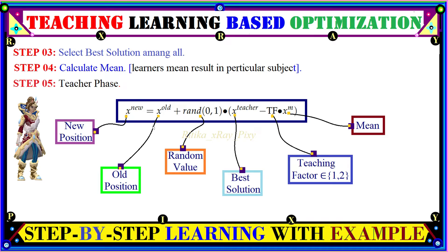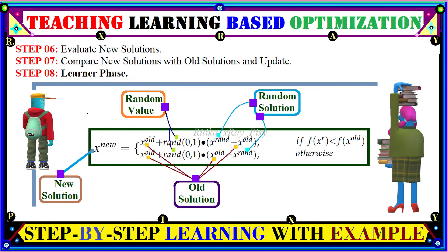In the teacher phase, we calculate a new solution. The new position equals the older position plus a normally distributed random value multiplied by the teacher's solution minus the teaching factor (either 1 or 2, randomly selected) times the mean value. After generating the new solution, we evaluate it and compare it with the older one and update accordingly.